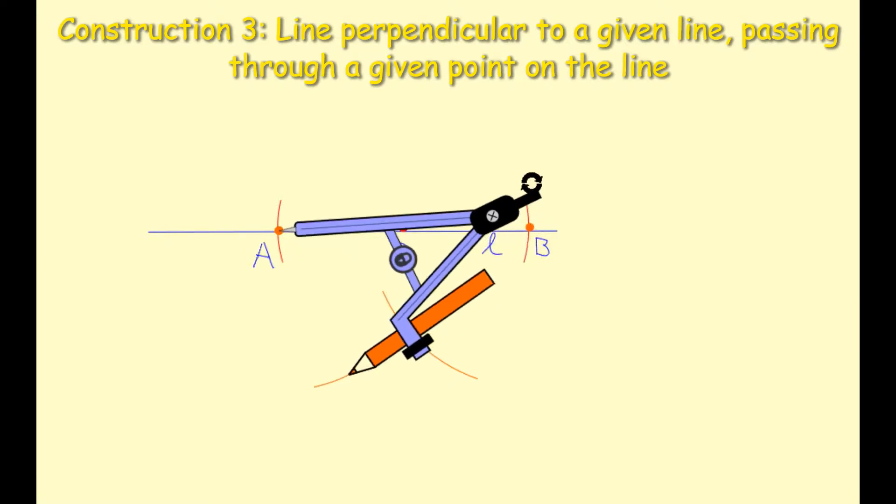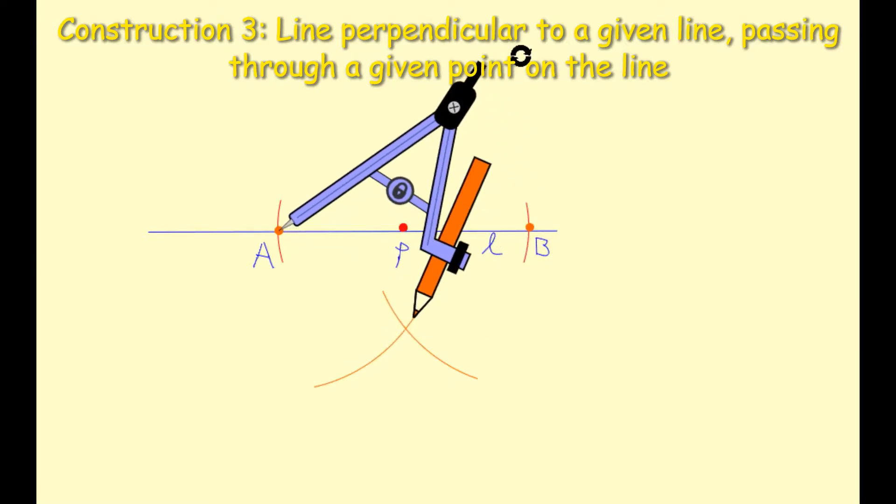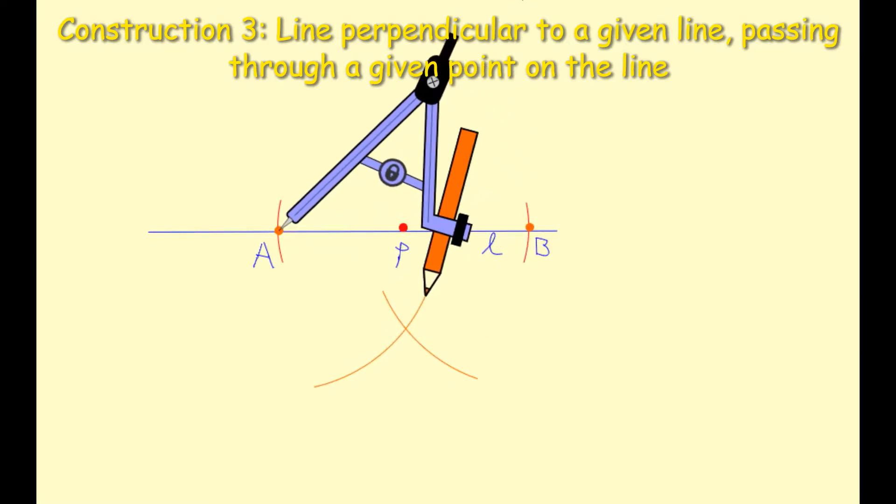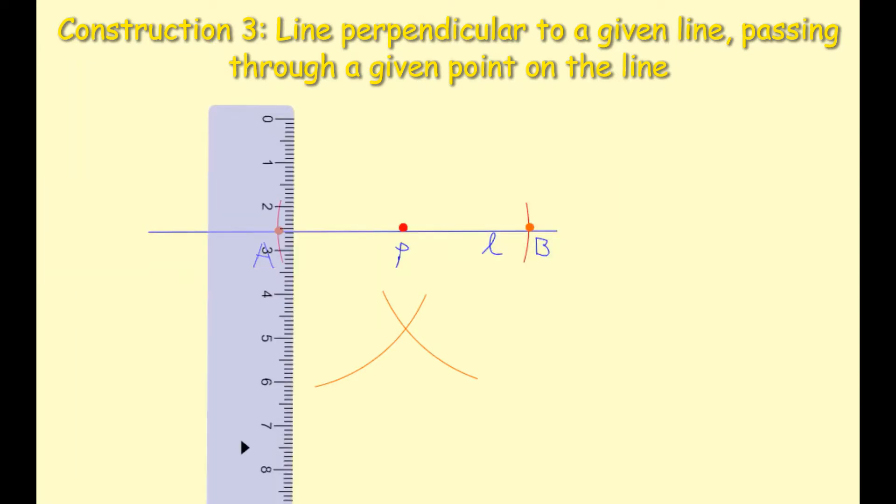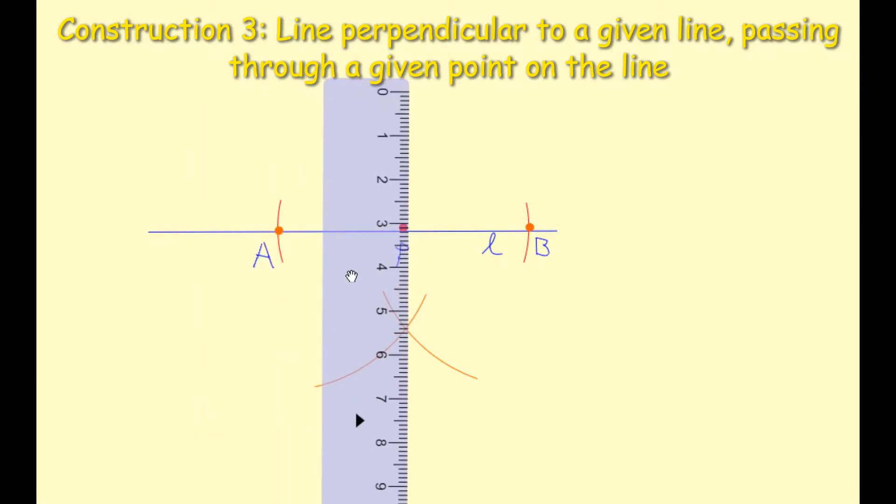I'm going to intersect those arcs. So you can see here that I'm constructing my second arc and it is intersecting the first arc. I can now remove my compass and I'm going to take out my ruler now, and I'm going to sit my ruler at the point P which they gave us originally.